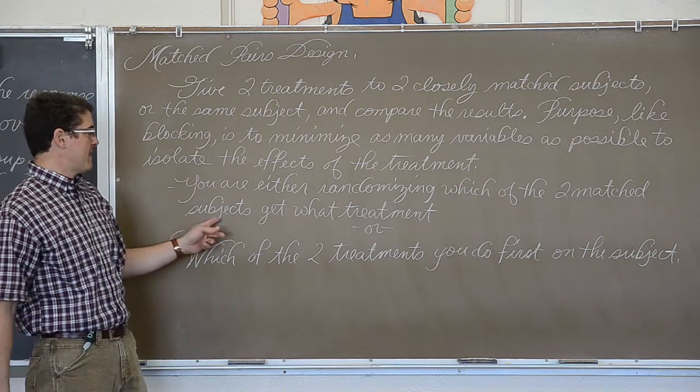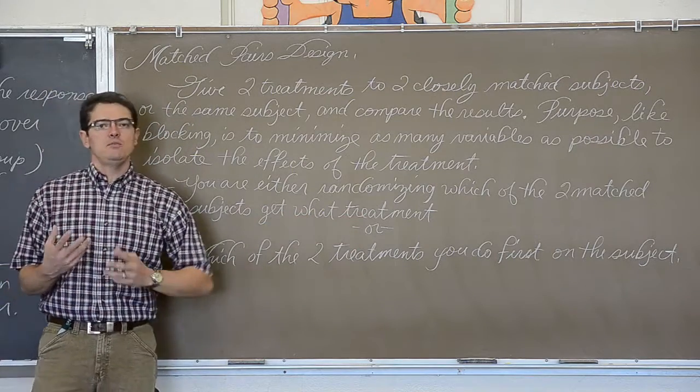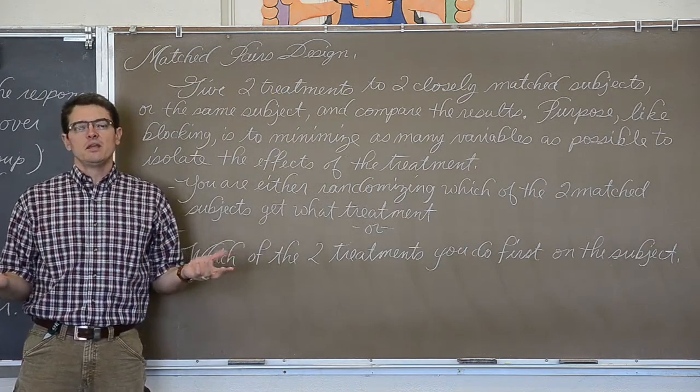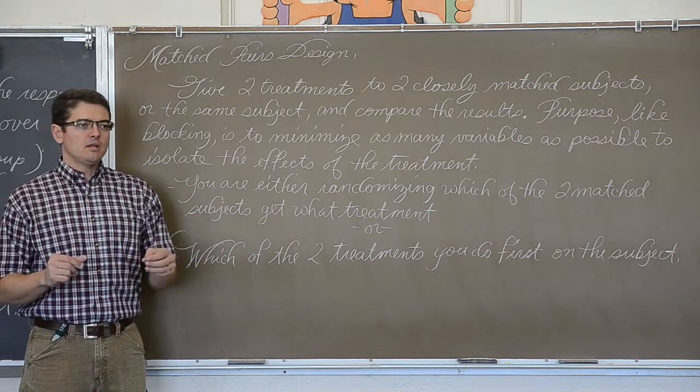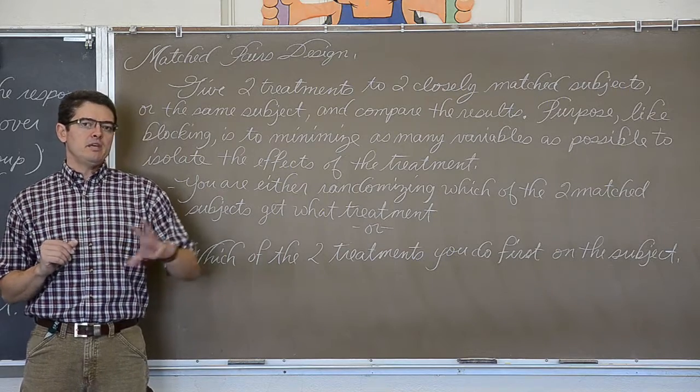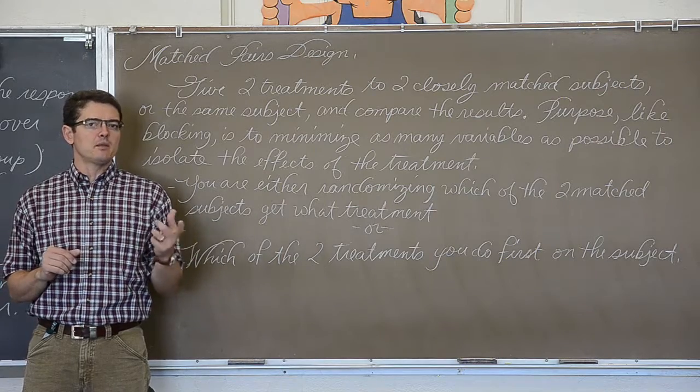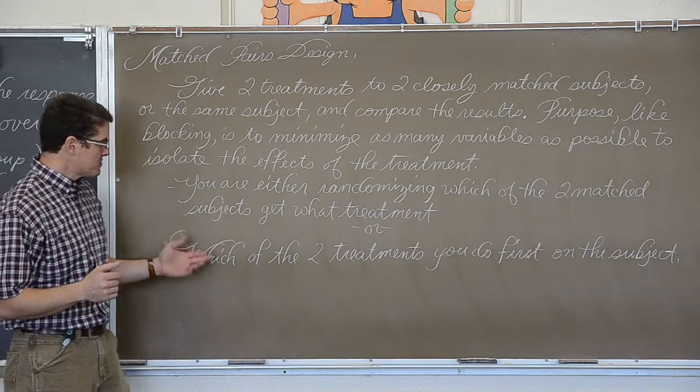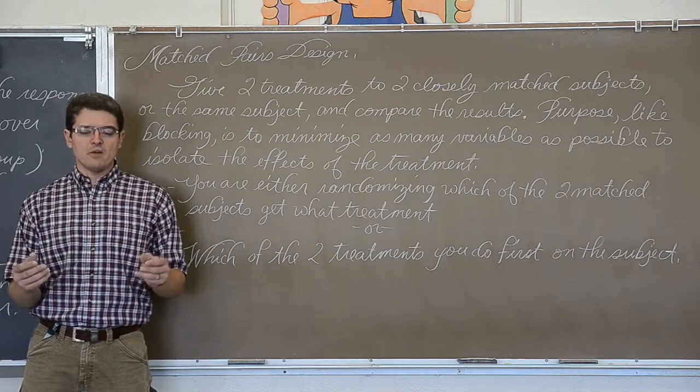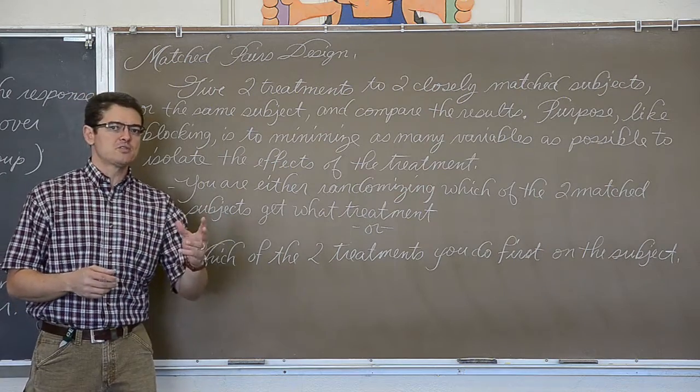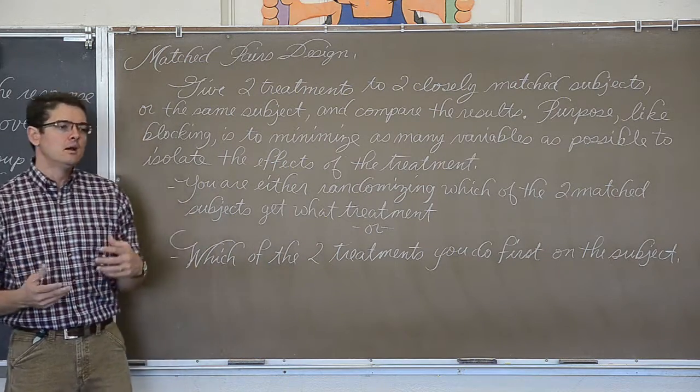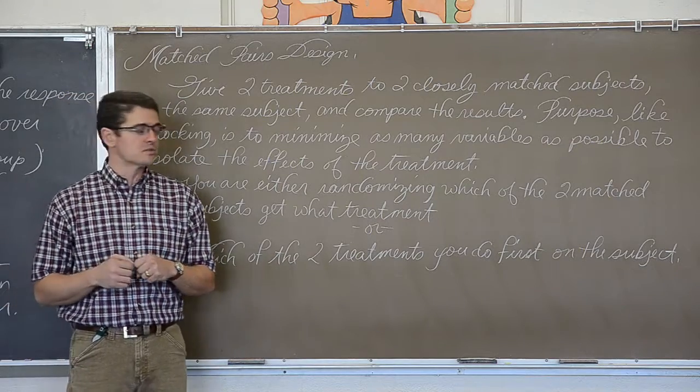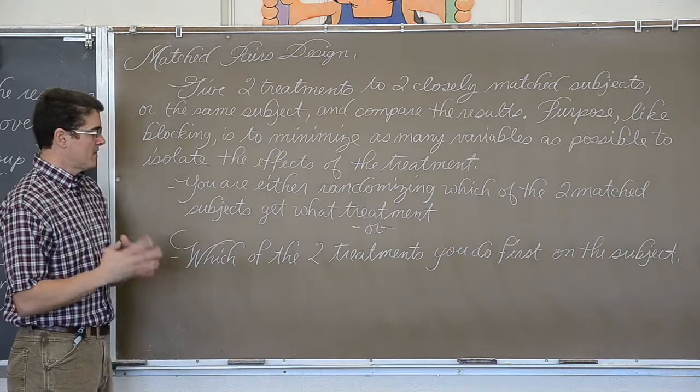You are either randomizing which of the two matched subjects get the treatment, or when you have the same unit or subject getting both treatments, you need to randomize which of the two treatments come first. So, in a dexterity test, if you are having somebody do something left-handed then right-handed, well I am right-handed. So, most things I do better with my right hand. But, even if you have me do a test with my left hand first, I will learn something about what it takes to get that job done, which might make my right hand work even faster. So, when you do that experiment, you would randomize, half the subjects by coin flip, or random selection, or names out of a hat, half the subjects or units will do something with their left hand first, and the other half will do the dexterity test with their right hand first. That kind of idea, where you are randomizing which treatment they get done first.